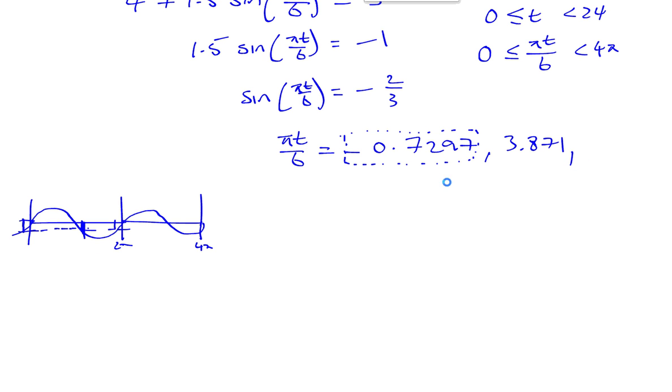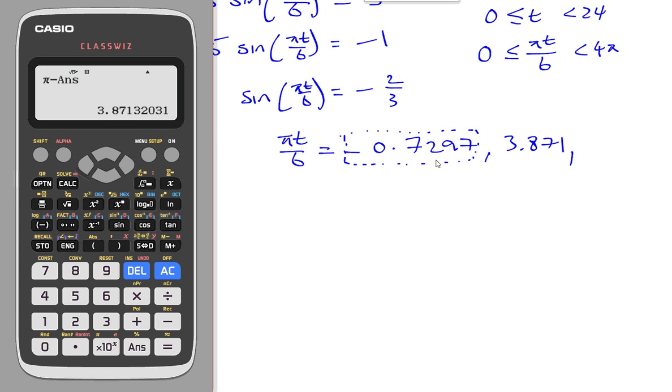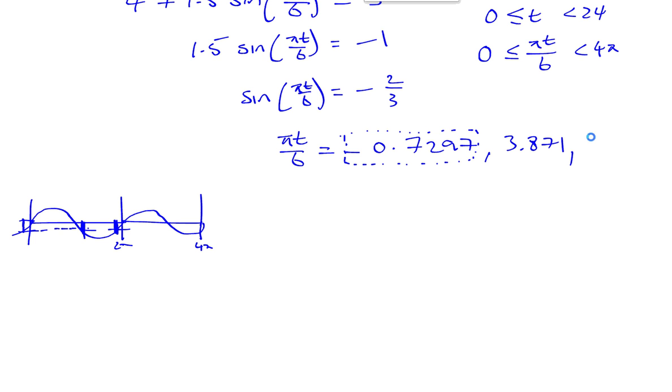Remember the sine curve repeats every 360 degrees. So from these two solutions you can generate all the other solutions. If I add 360 and subtract 360 from these, I'll get all the other solutions. If I add 360 to this, which is 2 pi because we're doing radians, to our answer before, I'm going to get 5.5534 or 5.5535.